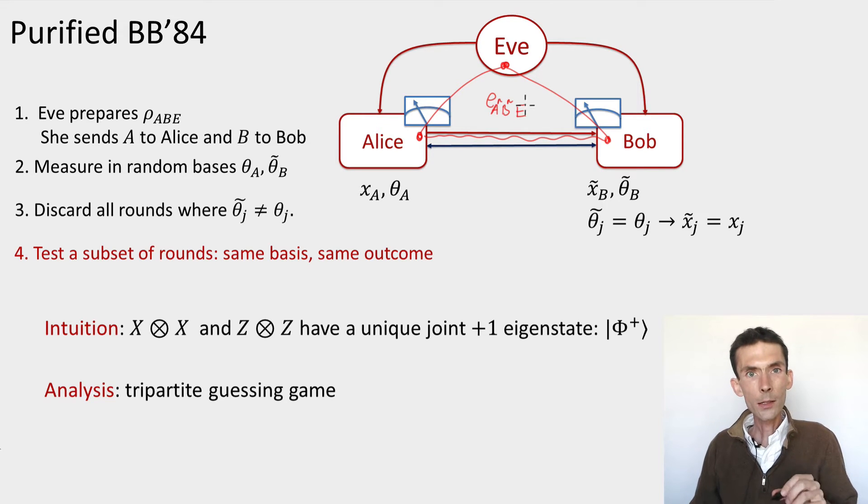Once Alice and Bob each have received their n qubits, then they make random choice of bases, computational or Hadamard, measure their qubits in these bases, record outcomes. Then they exchange the basis information, discard the rounds in which the bases were different.